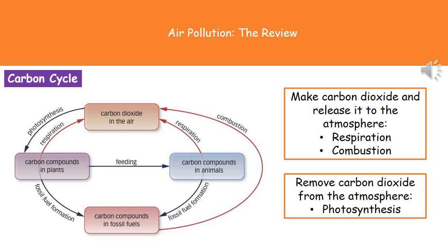The kind of exam question you're likely to see will give you an outline of the carbon cycle and ask you to label those three key processes. To get that right, spot the arrow going from carbon dioxide in the air to plants — that's photosynthesis. If it's going from a living thing back to carbon dioxide in the air, it's respiration. And if it's going from fossil fuels to the air, that's combustion.